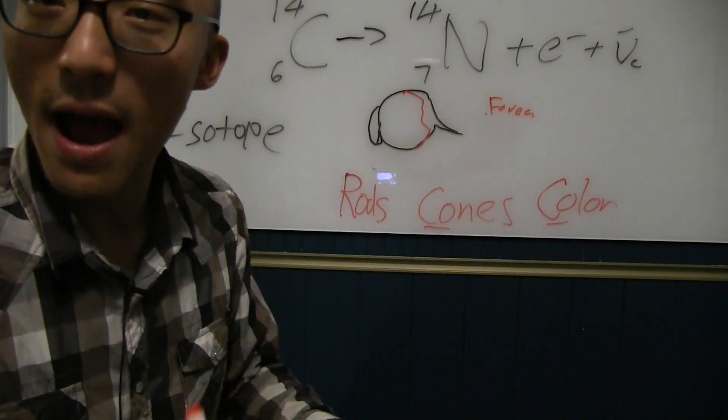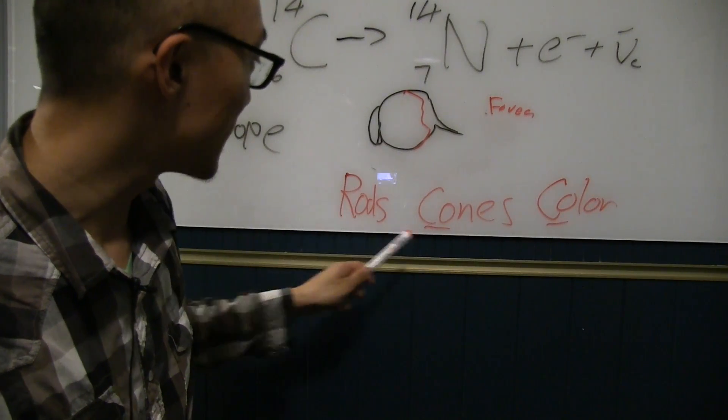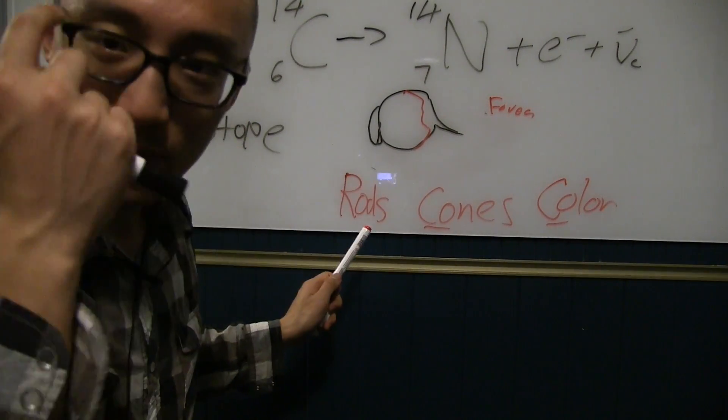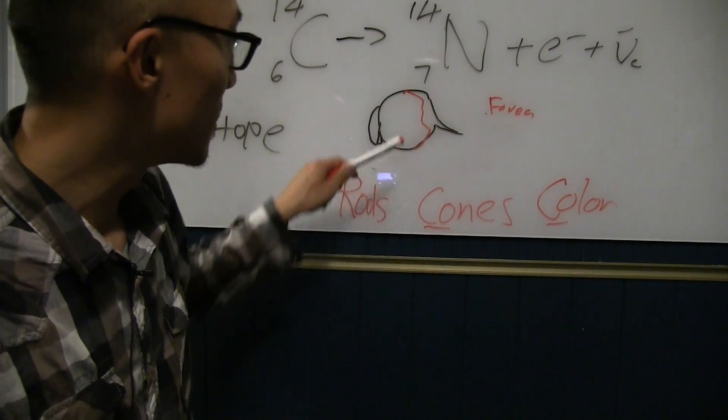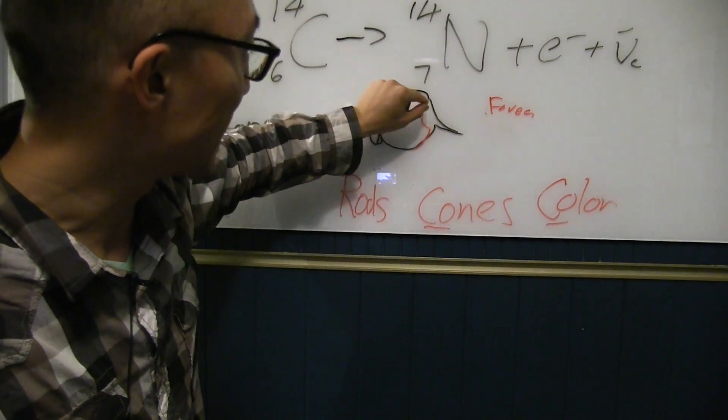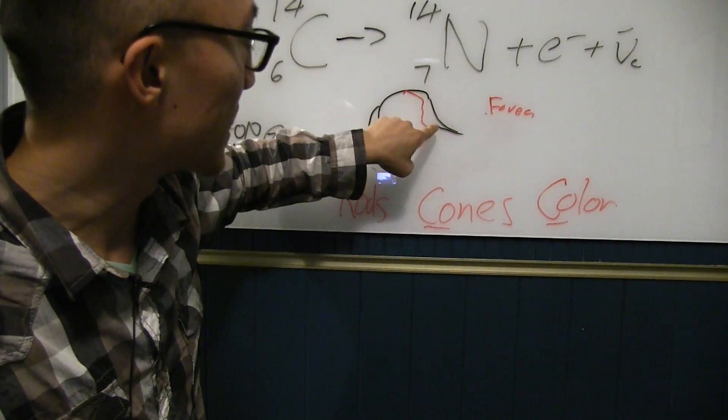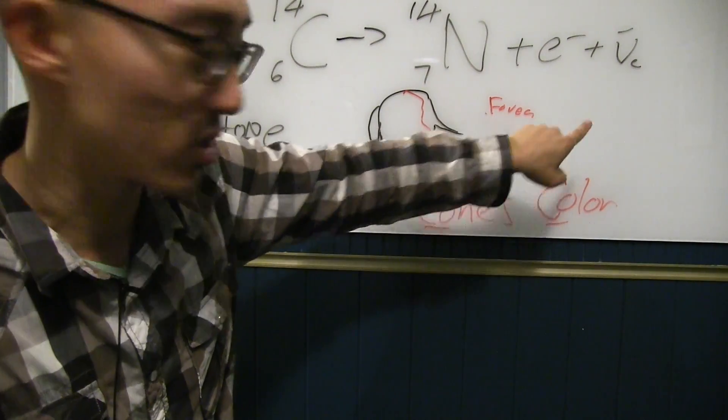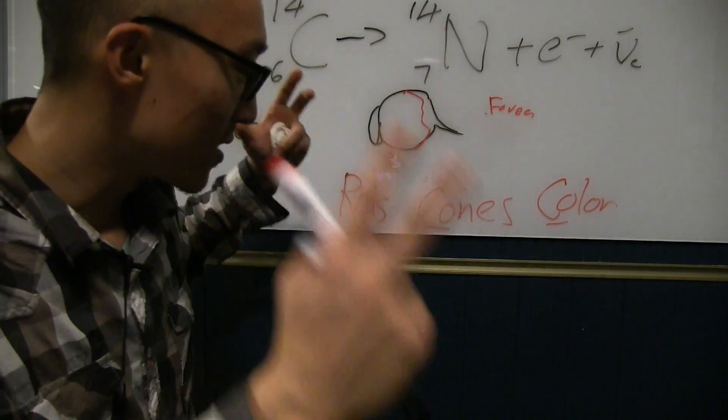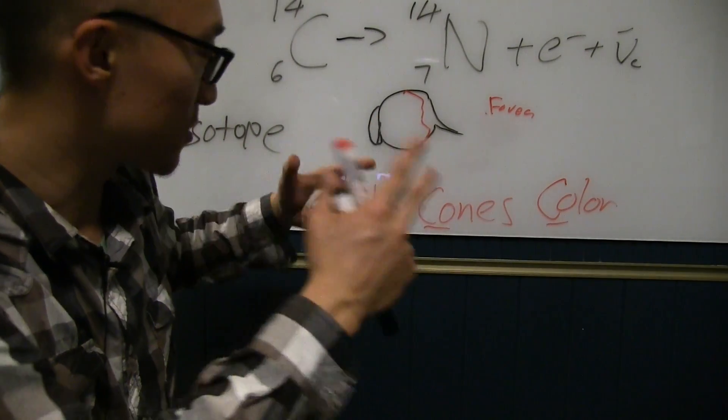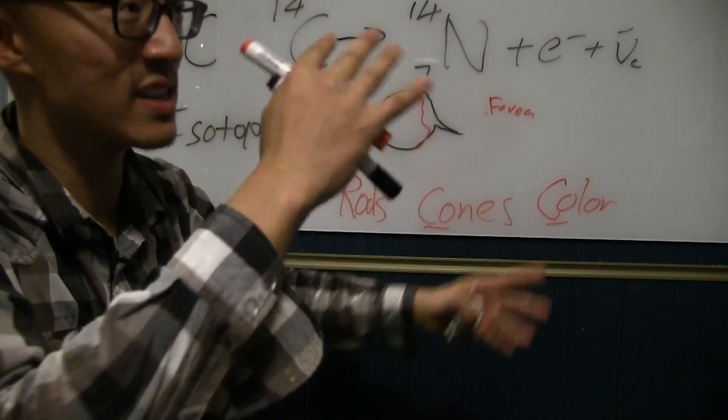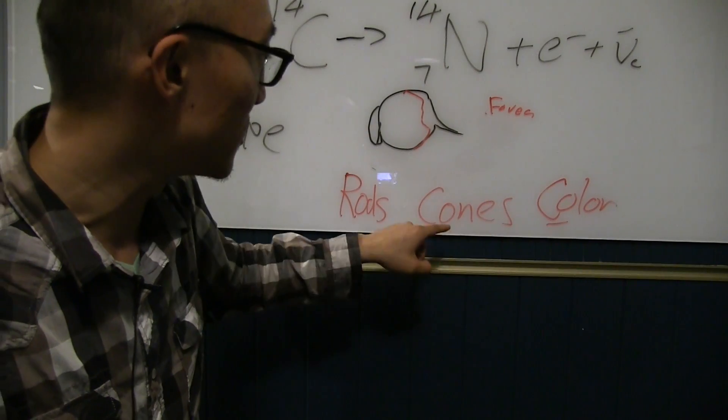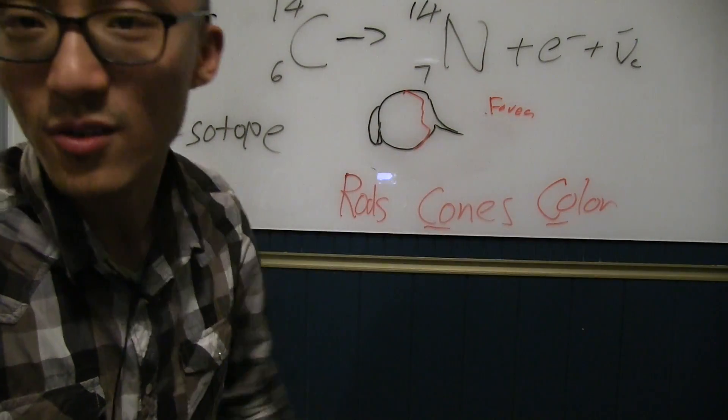But, anyways, sorry. I'm totally going on tangents. Rods and cones. Two types of receptors in your eye that help you, help process the light into something that then gets sent to the brain to get interpreted. Rods interpret the stuff that's more sort of not detail-oriented and related to lighting conditions. And, cones are all about the colors.